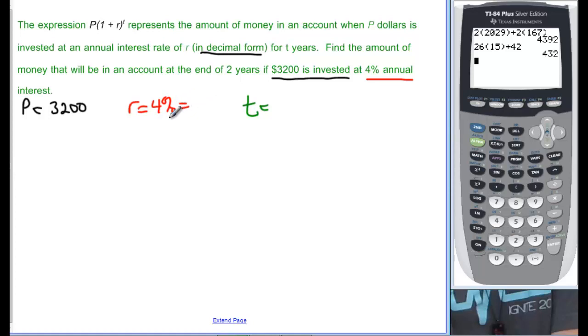So, it says 4%, but it told us that it had to be in decimal form. So, remember you move the decimal two places, one, two, and it becomes 0.04. And then the T is time, and that would be two years. So, plugging in what we know then, 3200 times, and then we have one plus 0.04. That's a plus 0.04, to the T, two.